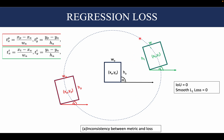The IOU would only be 1 when the prediction overlaps with the center point, and on the other points on the circle where there is no overlap, the IOU would be 0. Therefore, there is an inconsistency between the accuracy metric governed by the IOU and the loss, which is the smooth L1 loss.